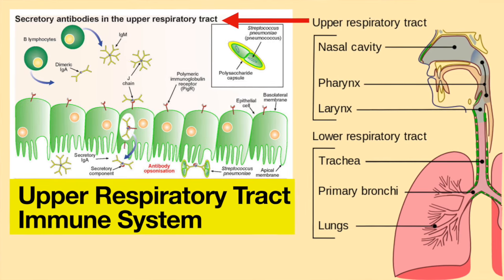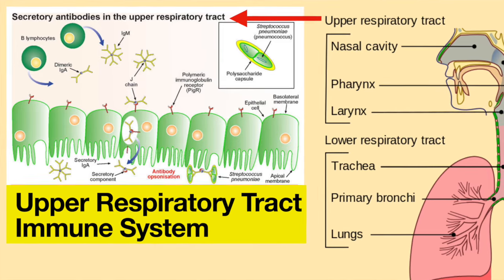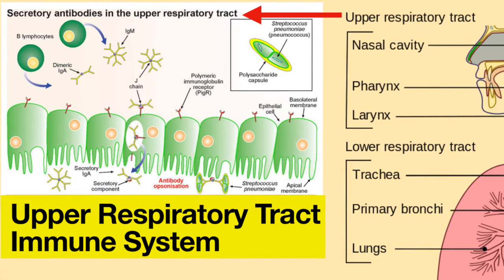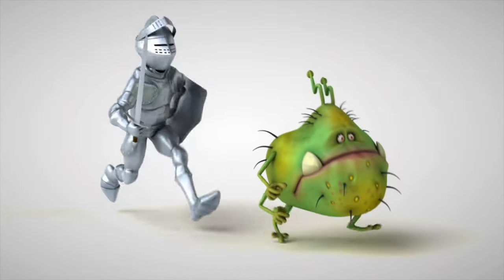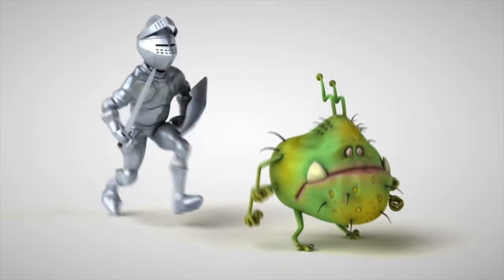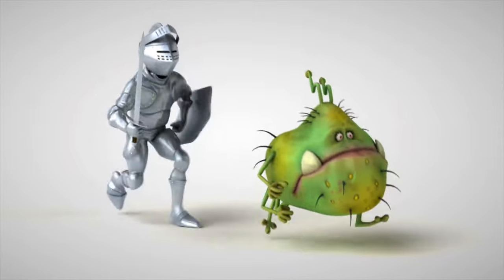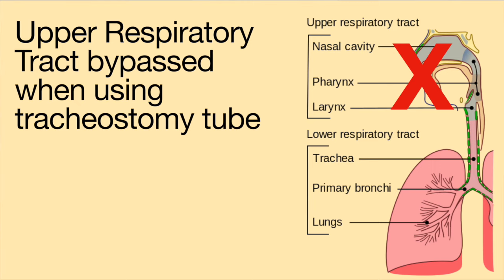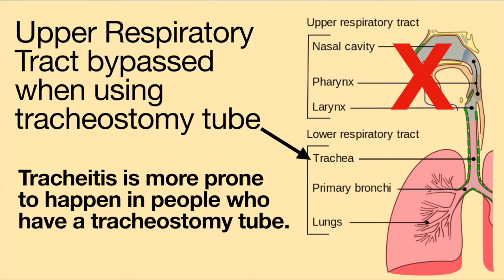Normally, bacteria and viruses are stopped via the immune system in the nose, mouth, and upper airways. As you travel down the respiratory tract, the body has fewer immune responses to invaders. In a regular person, this setup works well. However, having a tracheostomy tube means microorganisms do not have to overcome all the immune responses in the upper airways and now have direct access to the lower airways. Thus, tracheitis is more prone to happen in people who have a tracheostomy tube.